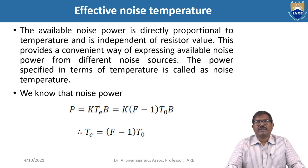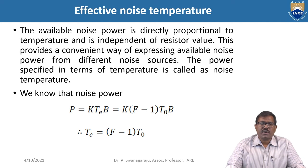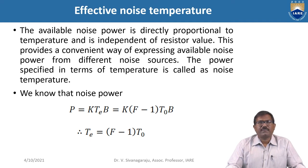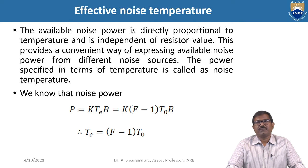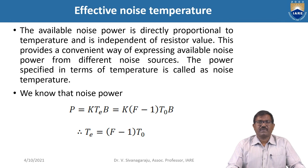Coming to the effective noise temperature: the available noise power is directly proportional to temperature and is independent of resistor value. This provides a convenient way of expressing available noise power from different noise sources. The power specified in terms of temperature is called noise temperature. The noise power is P equal to kTB, where k is the Boltzmann constant and B is the noise bandwidth. T is equal to F minus 1 into T0, so substituting into P equal to kTB, therefore T equals F minus 1 into T0.